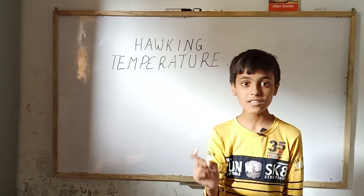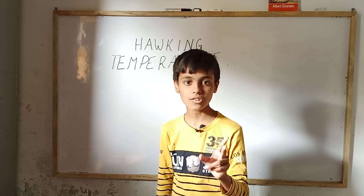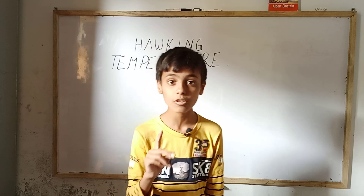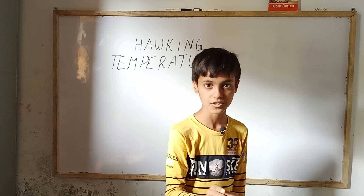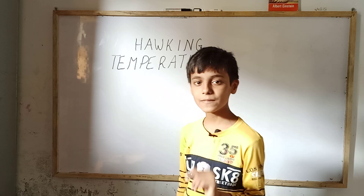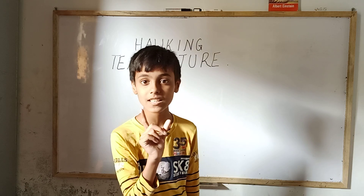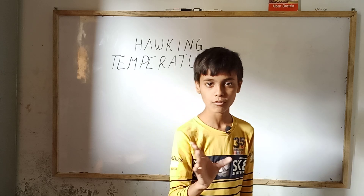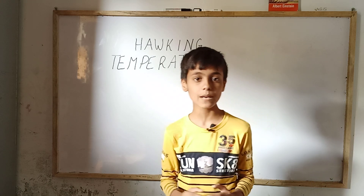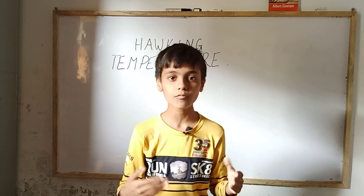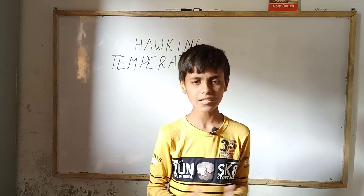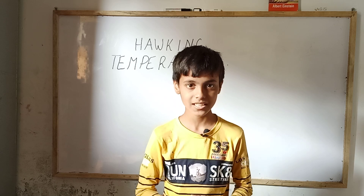This temperature was discovered in 1974, which is known as the glorious year for black hole research and discovery. This temperature — for any black hole whose mass equals the mass of our sun — is known as Hawking's temperature. So this was my today's topic about Hawking's temperature, black holes, and how stars are formed. Thank you.